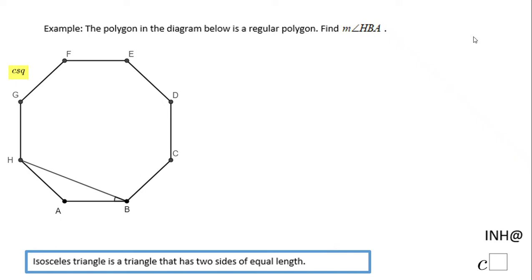Welcome or welcome back to I Need Help at C Squared. In this example we have a regular polygon and we need to find these angles. Because this polygon is a regular polygon, that means AB and AH are congruent.